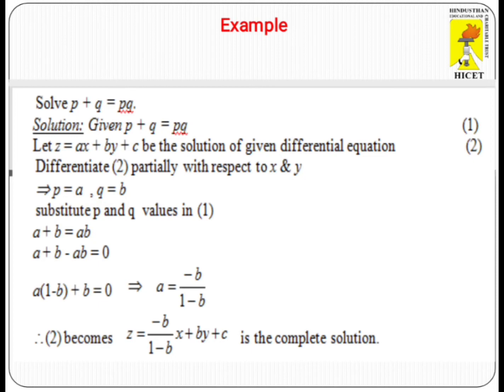For example, P + Q = PQ. This is the equation of the form F(P,Q) = 0. In this case, let us consider the solution of the given partial differential equation as Z = AX + BY + C.